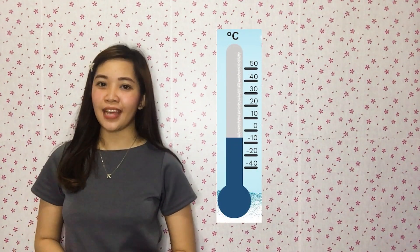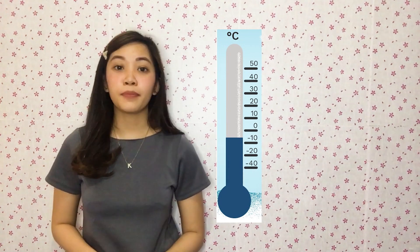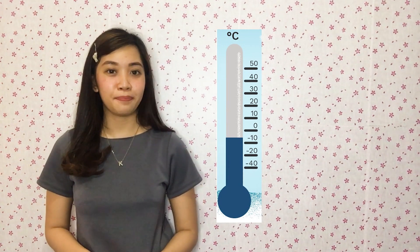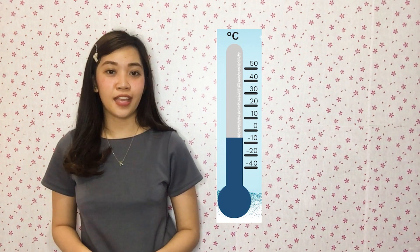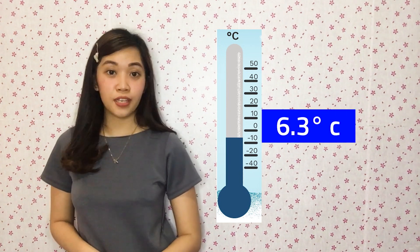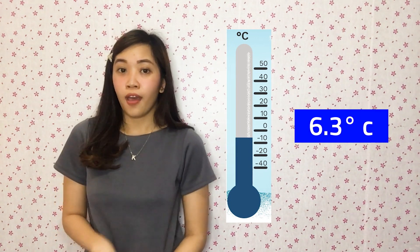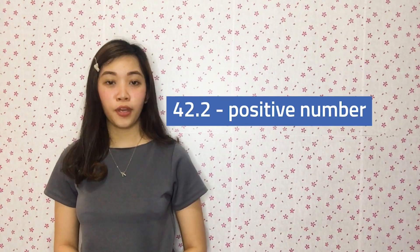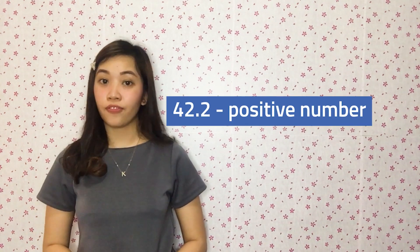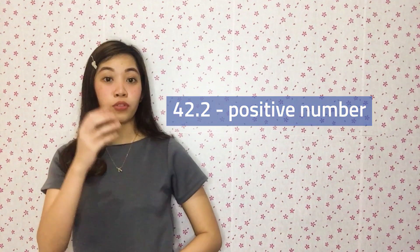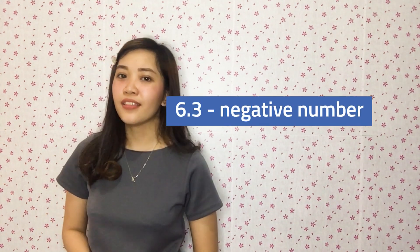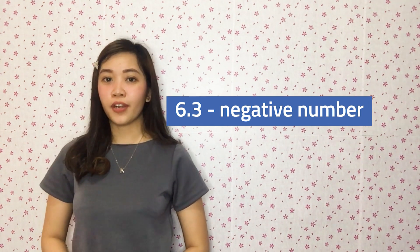How hot can that be? Let's look at this blue-colored room temperature thermometer this time. The lowest temperature ever recorded in the Philippines was in Baguio City on January 18, 1961 at 6.3 degrees Celsius. That must be cold! We can call 42.2 a positive number because it is a number that pulls upwards like the balloons, while 6.3 is a negative number because it tracks downwards like the weights.